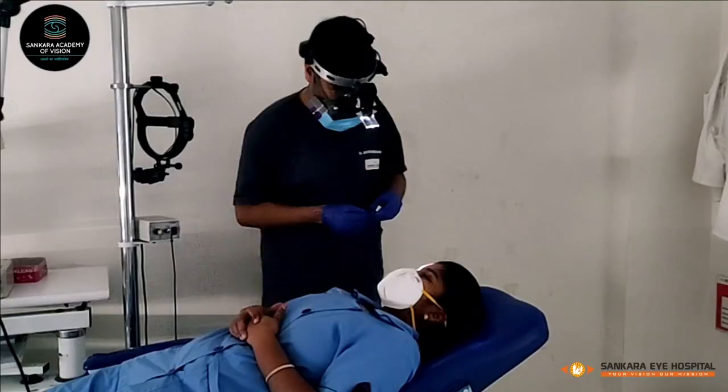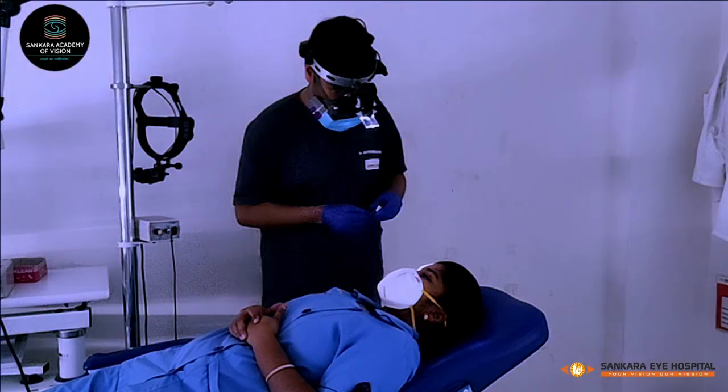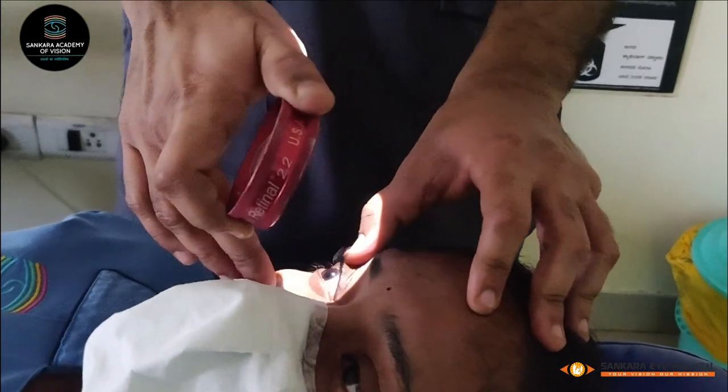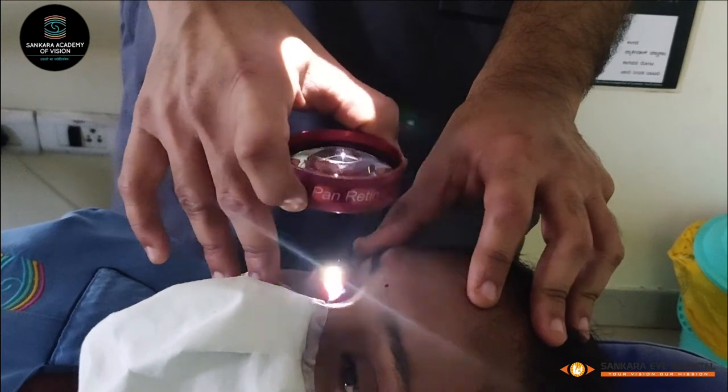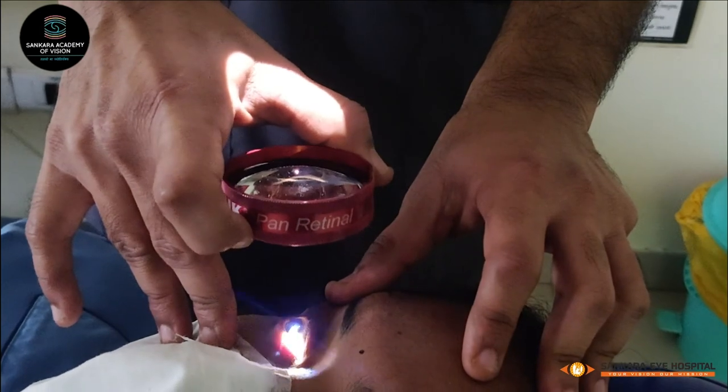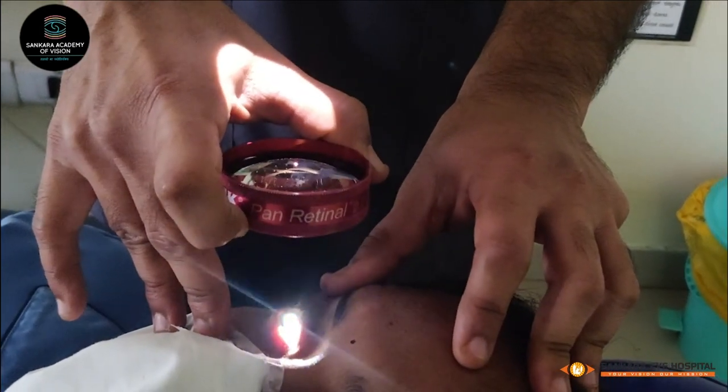The patient should lay flat in a reclining chair with slight extension of the head, with room for you to move freely around the head. Room lights should be dimmed for better visualization. The condensing lens is grasped between the bulb of the thumb and tip of the flexed index finger. The middle finger holds one lid and also acts as a pivot for movement of the lens. The thumb of the other hand can be used to hold another lid.